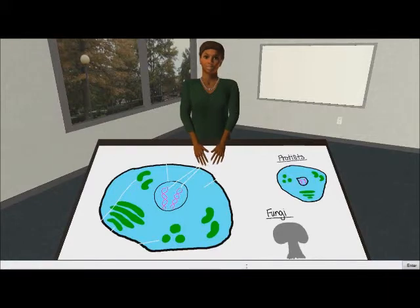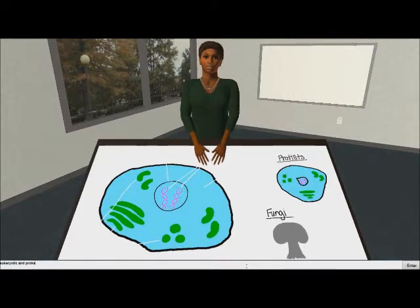What are the two types of cells? Cool. The two types of cells are prokaryotic cells and eukaryotic cells.